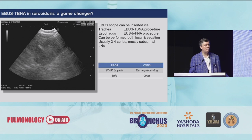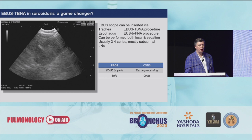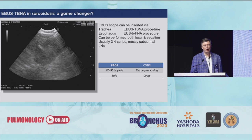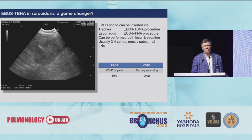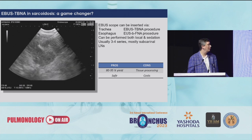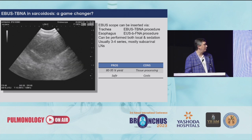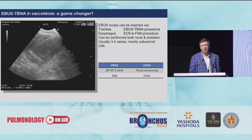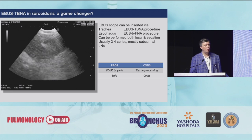What are the pros for this procedure? It's really high yield and really safe. The incidence of complications is lower than 1%. The cons: it's expensive and there are problems with tissue acquisition, especially when we talk about pathology. As you can see in the picture, we see the lymphatic node behind the bronchial wall and we perform a navigated biopsy.